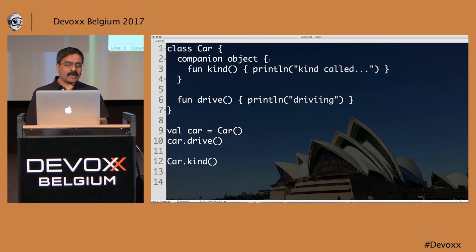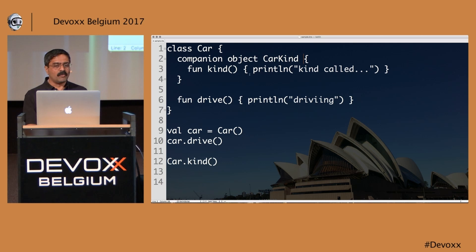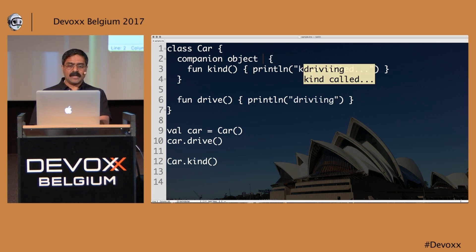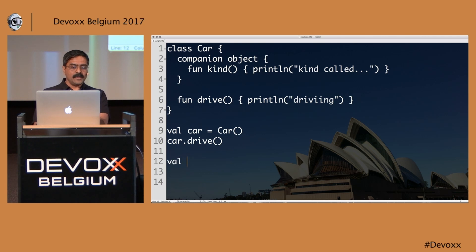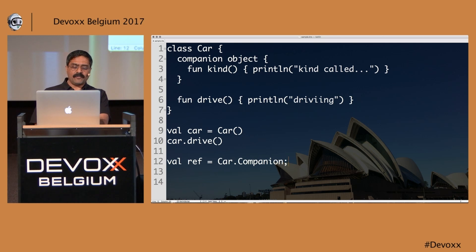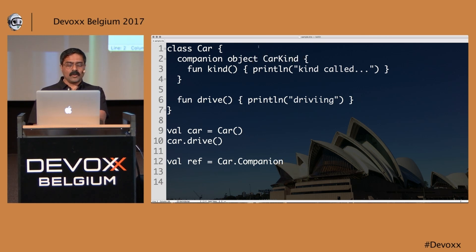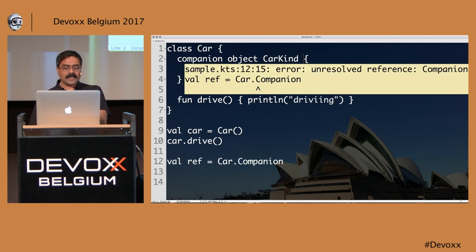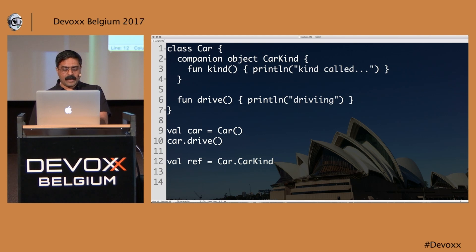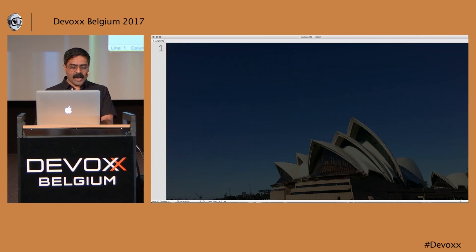You can also provide a name for your companion class, like 'companion object CarKind'. If you want to get a reference to the companion, you say 'Car.Companion' — or if you named it, you'd use 'Car.CarKind'. There are different ways to access this particular companion object.